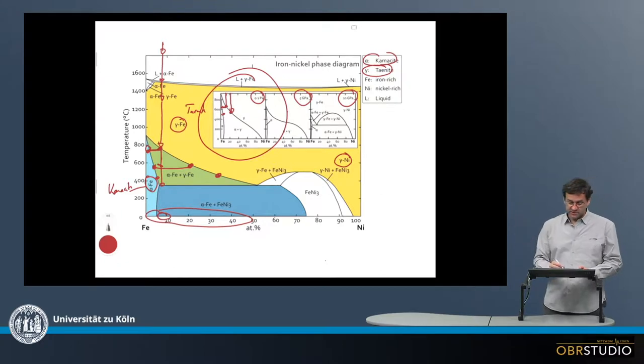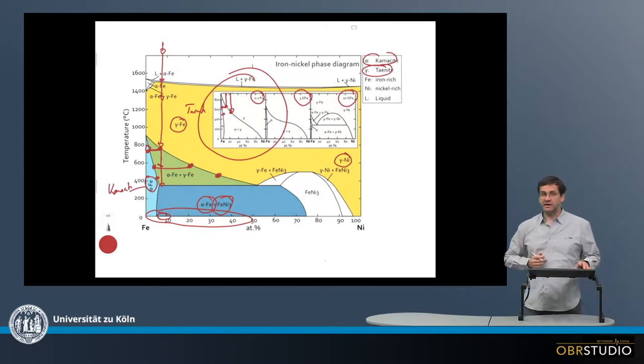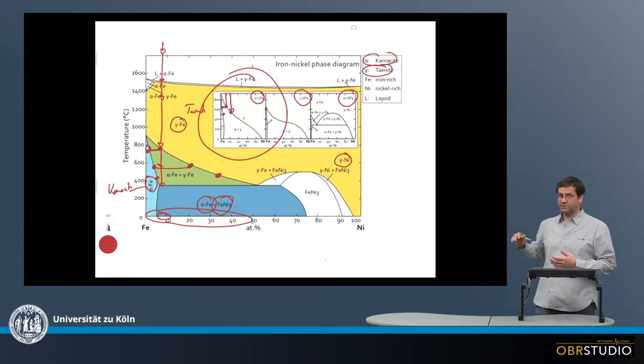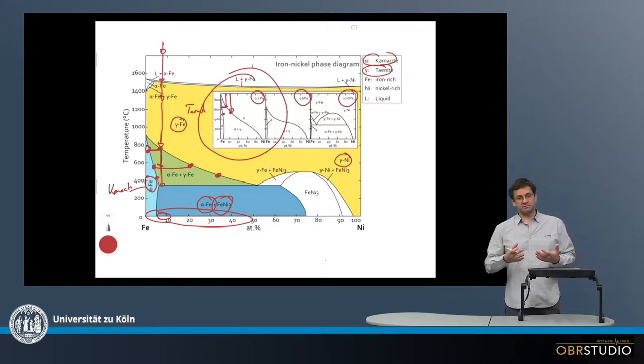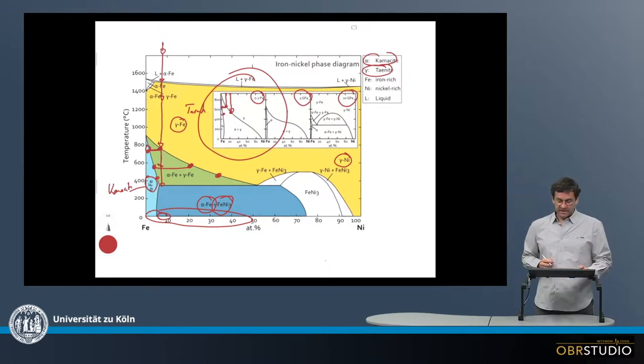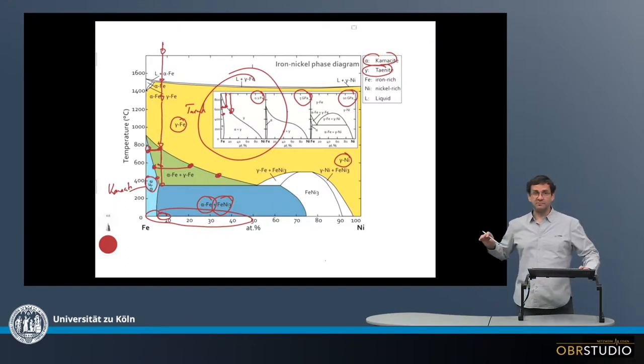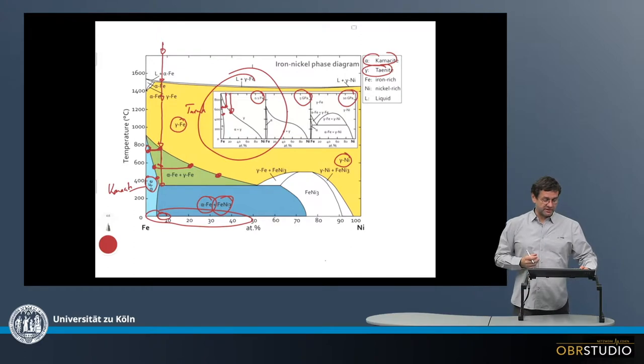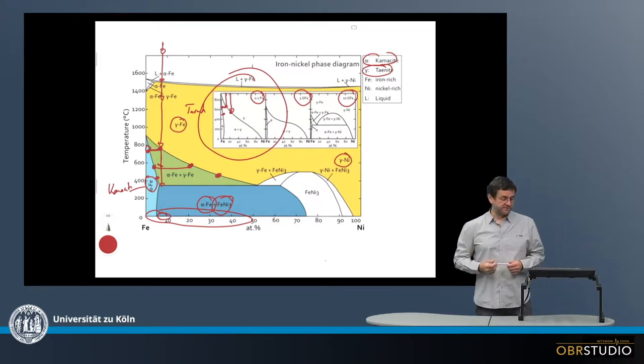The remaining alpha iron, the gamma iron then basically transforms into an iron-nickel-3. But this transformation never really happens because it's at such low temperatures that the kinetics are so slow that this transformation doesn't really happen. But these are the three principal phases possible in this phase diagram: the kamacite, the taenite, and this iron-nickel-3. Usually in meteorites you only see the kamacite and the taenite.